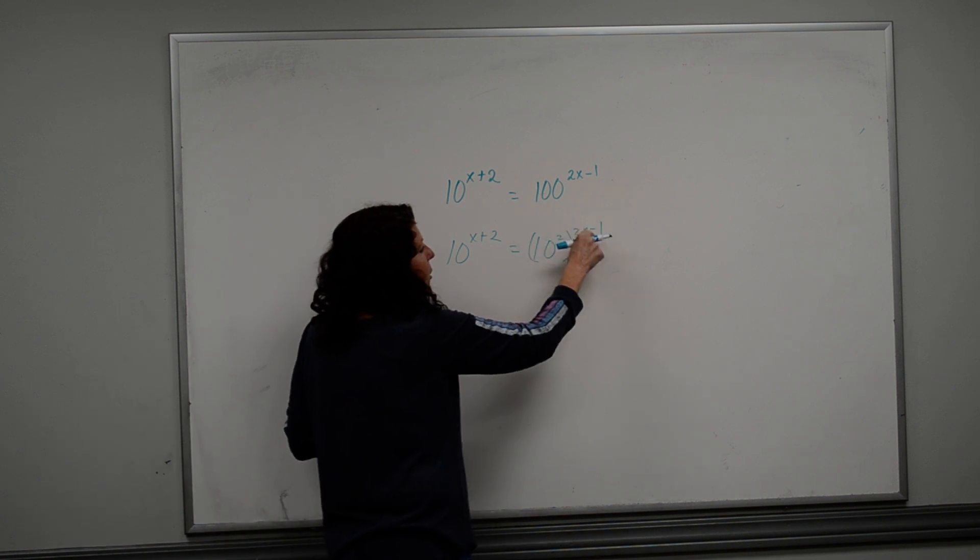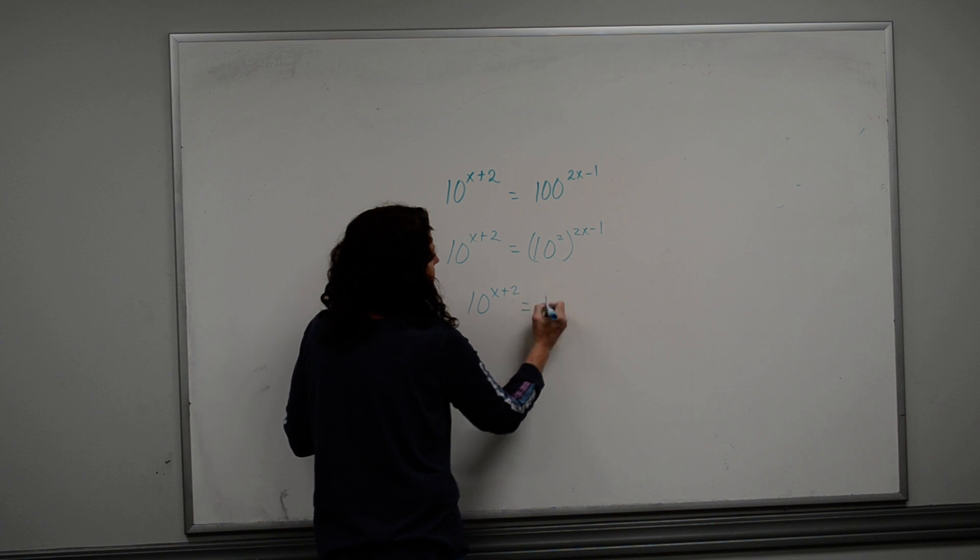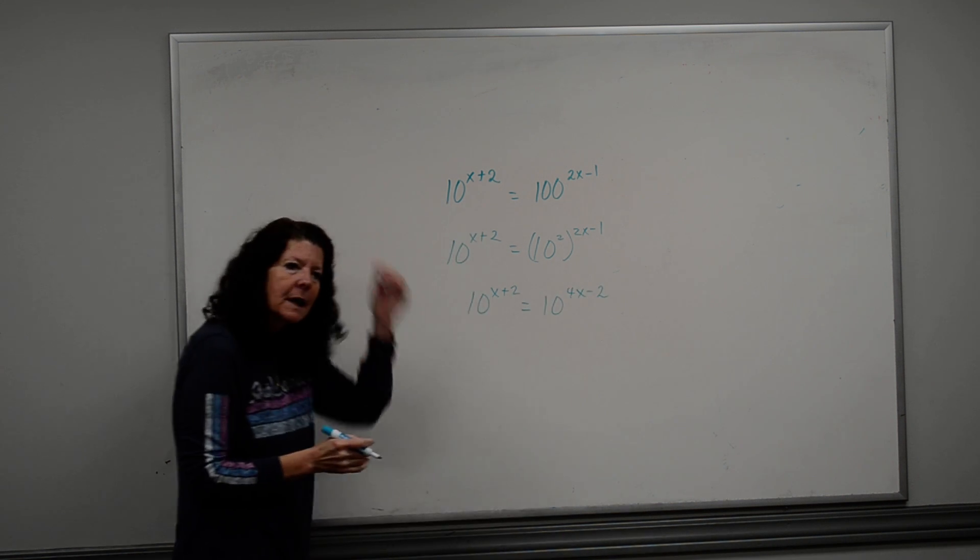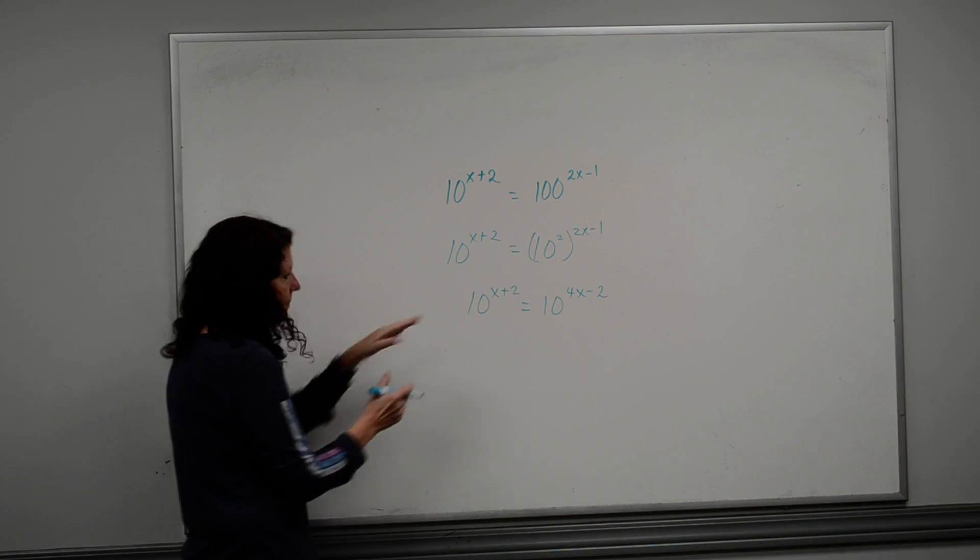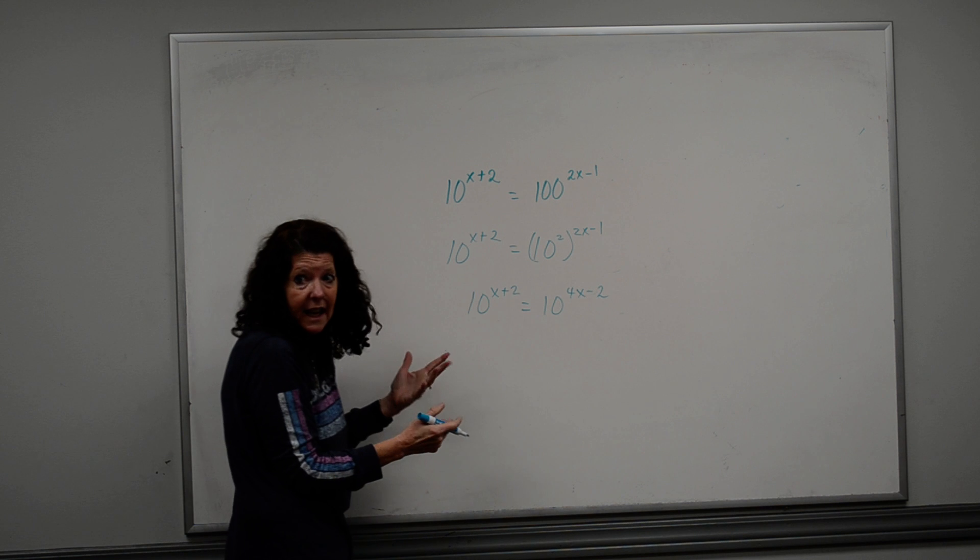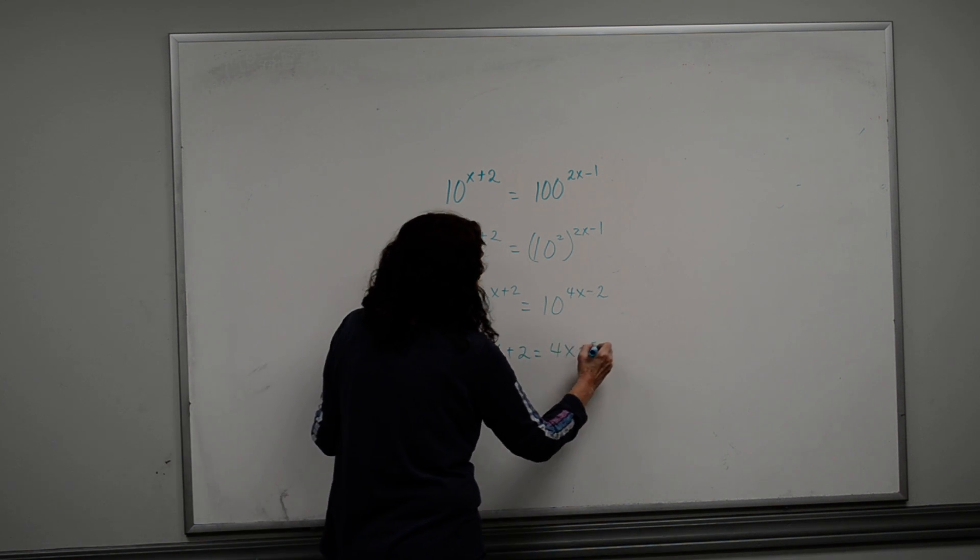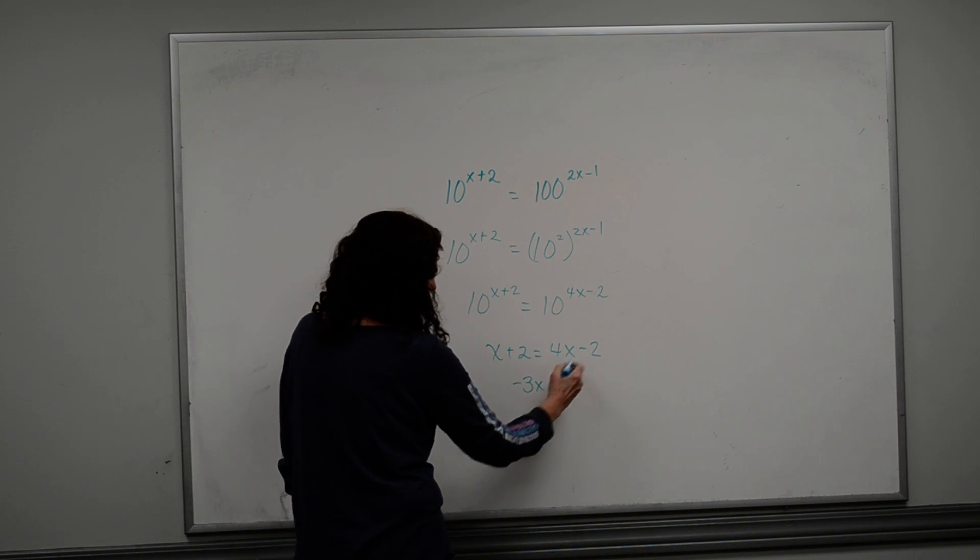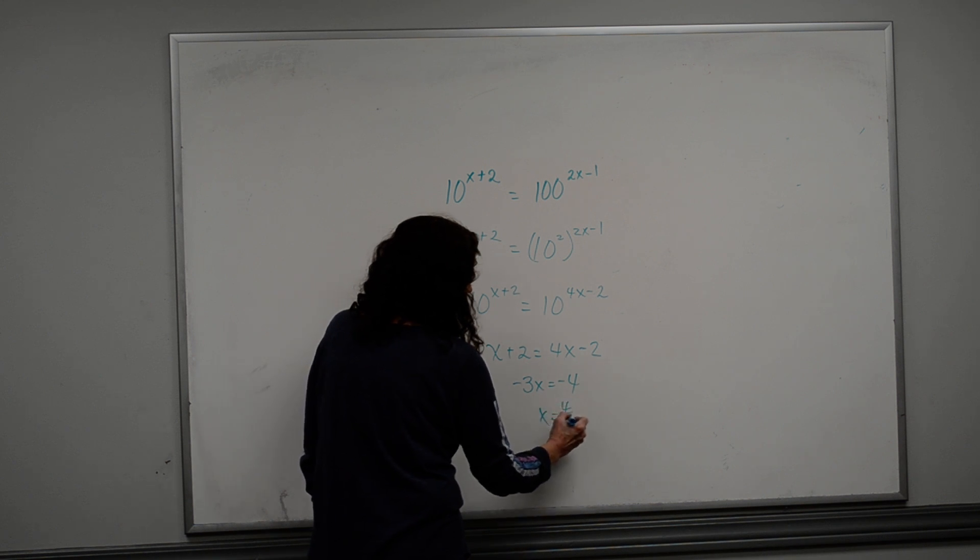Remember, a power raised to a power is multiplied, so this becomes 4x minus 2. So, what am I going to do now? I'm just going to set the exponents equal to each other. So, I have x plus 2 is equal to 4x minus 2. When I subtract, I get a negative 3x. When I subtract there, I get a negative 4. When I divide, I'm going to get 4 thirds.